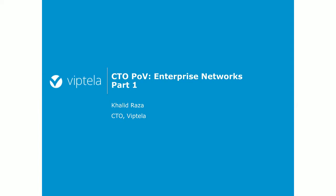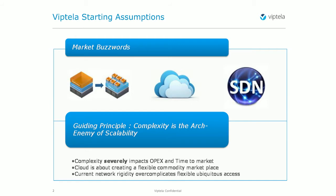We started Viptela around 2012, but the thought process of this architecture started brewing around 2011. The buzzwords around those days — and still in the marketplace — is how do I utilize the commodity space created for cloud? But at the root of all of these, it's about connecting applications to users regardless of location. As early networks were built, locations were predictable — data was hosted in data centers, exits were around DMZs near the data center. We're moving from an environment centered around data centers to one distributed into cloud.